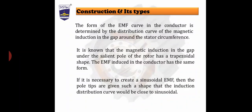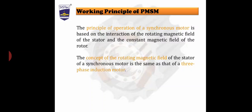Now we will move to the next point: the working principle of the permanent magnet synchronous machine. The working principle of this machine is similar to that of a synchronous machine — it is a combination of a rotating magnetic field and a static magnetic field. The principle of operation of the synchronous motor is based on the interaction of the rotating magnetic field of the stator and the constant magnetic field of the rotor. Because the rotor uses a permanent magnet, it creates a static magnetic field.